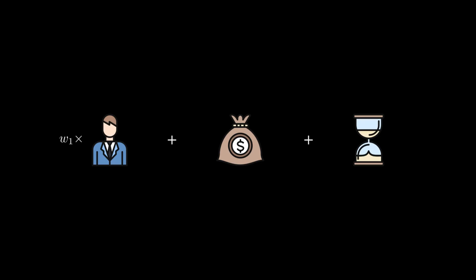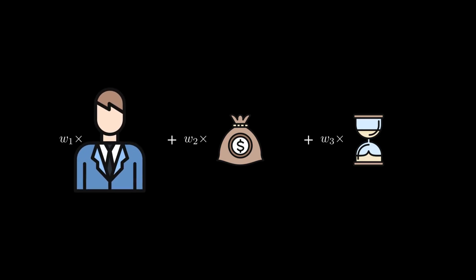The weight controls how important that feature is for the prediction. If the weight is high, the input has a strong influence. If it's low or zero, the model ignores it. If the weight is negative, the feature works in the opposite direction.